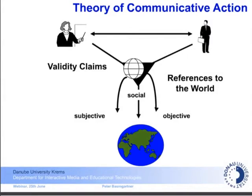Normally we only think about the objective validity claims — we call it truth. If I say the door is closed in my room, everybody in my room can see it and say it's right or wrong. If you have a hypothesis, you could try to go through the door, but if you hit it, you get feedback from the real world. So the objective point of view is a kind of truth value — my validity claim has an objective reference to the world.